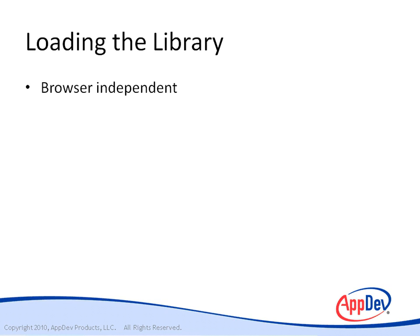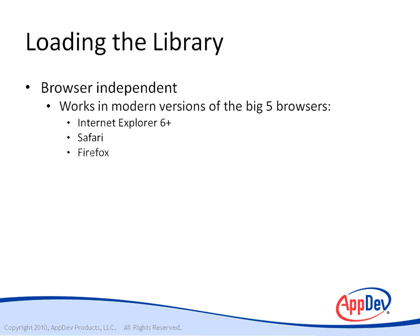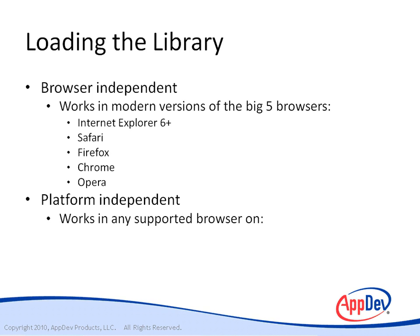jQuery will load into any browser that supports JavaScript, but it is specifically tested with the big five browsers: Internet Explorer, Safari, Firefox, Chrome, and Opera. jQuery may also work with other browsers that share rendering engines with supported browsers — for example, Camino uses the same WebKit internals as Chrome and Safari. This browser and platform independence means that pages can be developed in any of these environments for viewing in any of these environments, though it's always a good idea to test your pages in all environments in which you expect them to be viewed.